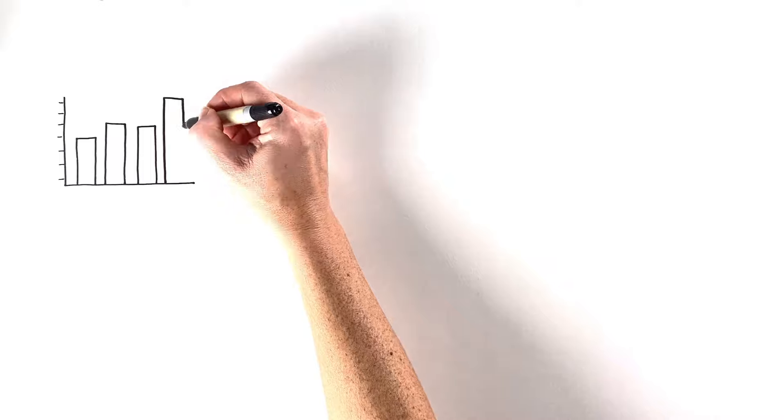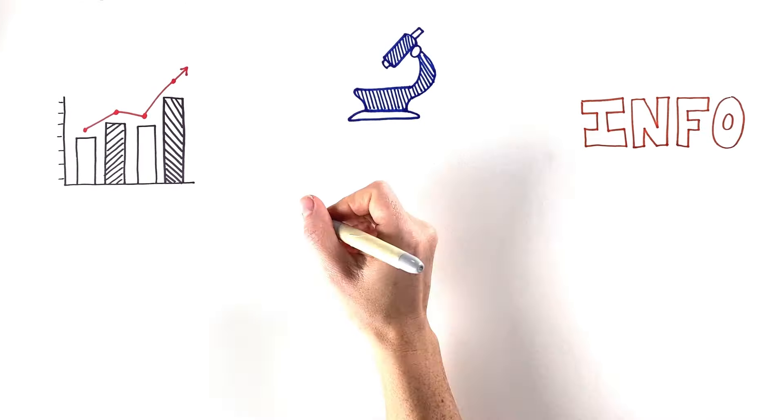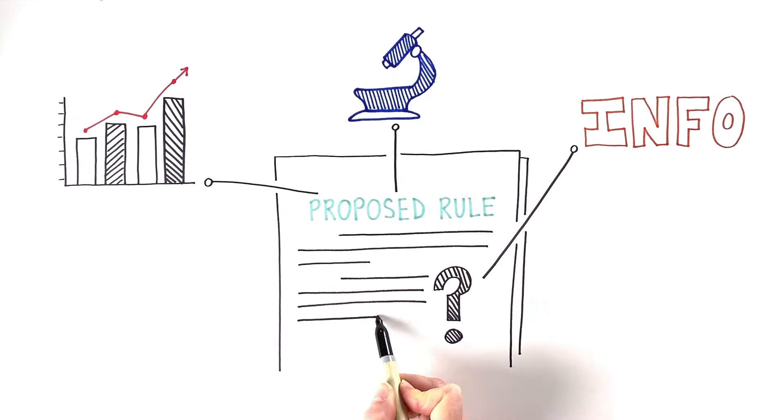Public comments may include data, research, or other information which point out parts of a proposed rule that may be confusing or suggest different wording. Comments are not votes.